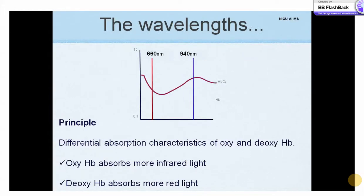The principle of pulse oximetry is based on the differential absorption characteristics of oxygenated — that is red — and deoxygenated — that is dark — hemoglobin. Oxygenated hemoglobin absorbs more infrared light, allowing more red light to pass through, whereas deoxygenated hemoglobin absorbs more red light, allowing more infrared light to pass through.